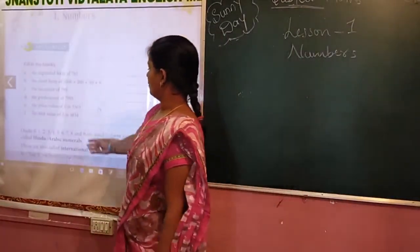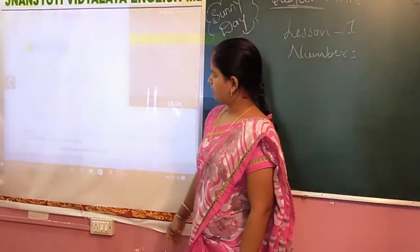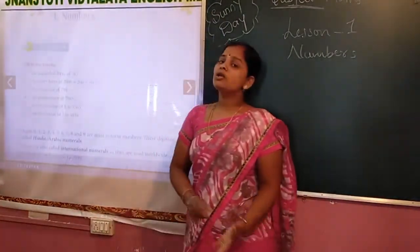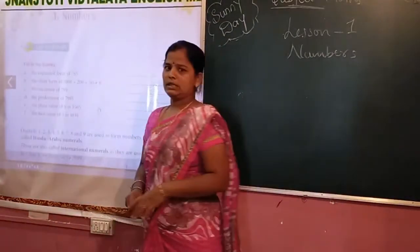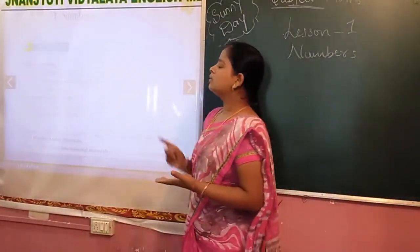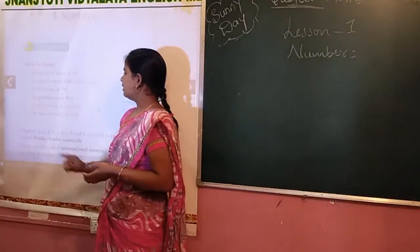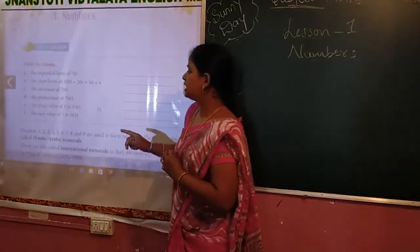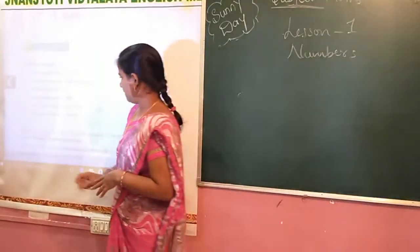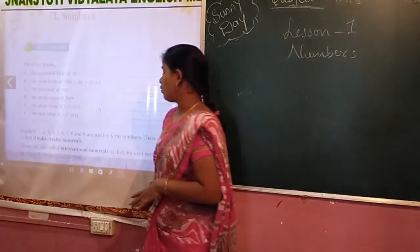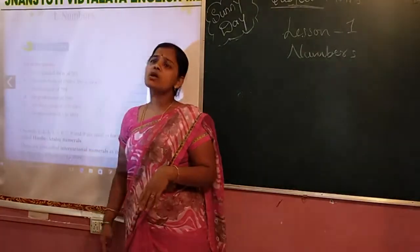Before starting our lessons, here are some questions. Fill in the blanks — observe these and do them at home. Topics include: the expanded form, already done in our previous class, the short form, the successor, the predecessor, and the place value of 6 in 3,565 and the face value of 3 in 4,834.